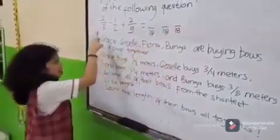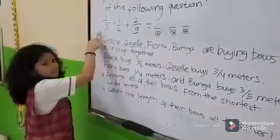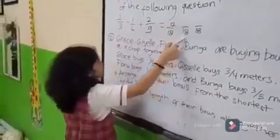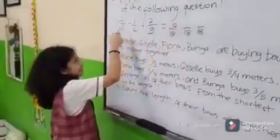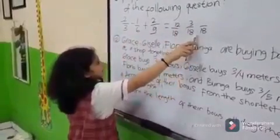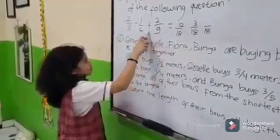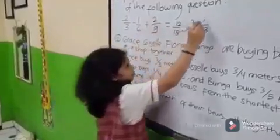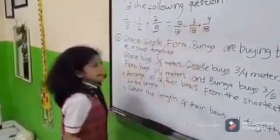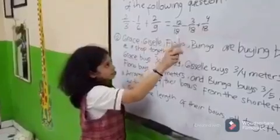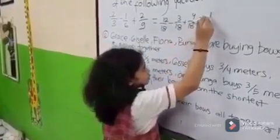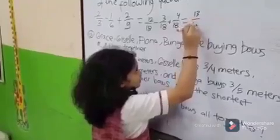Eighteen divided by three is six; six times two is twelve. Eighteen divided by six is three; three times one is three. Eighteen divided by nine is two; two times two is four. So, twelve-eighteenths minus three-eighteenths plus four-eighteenths is equal to thirteen-eighteenths.